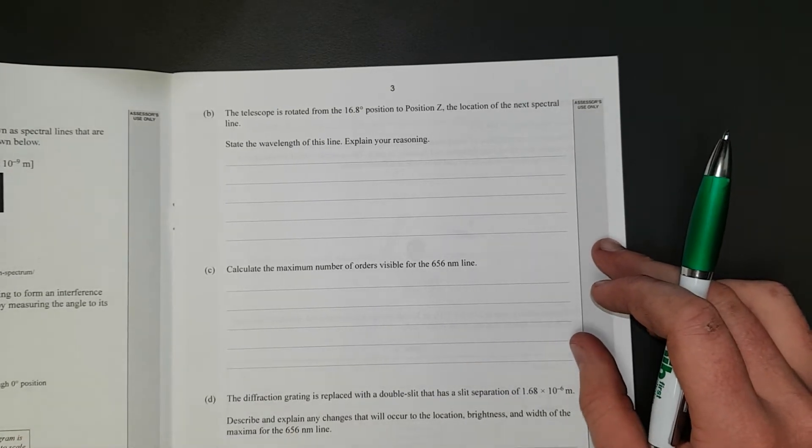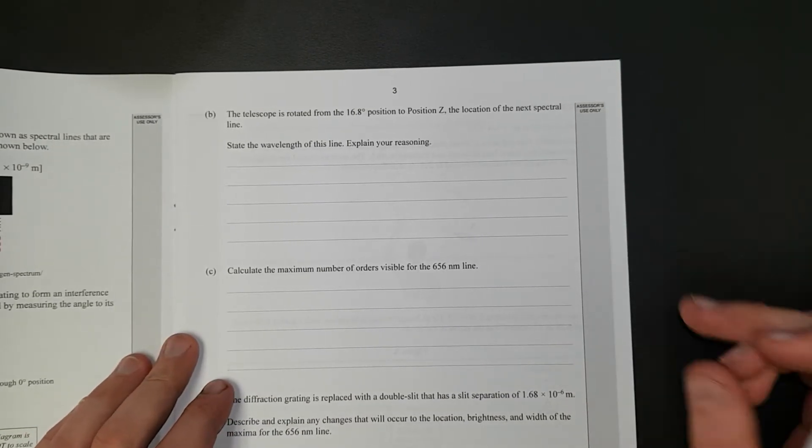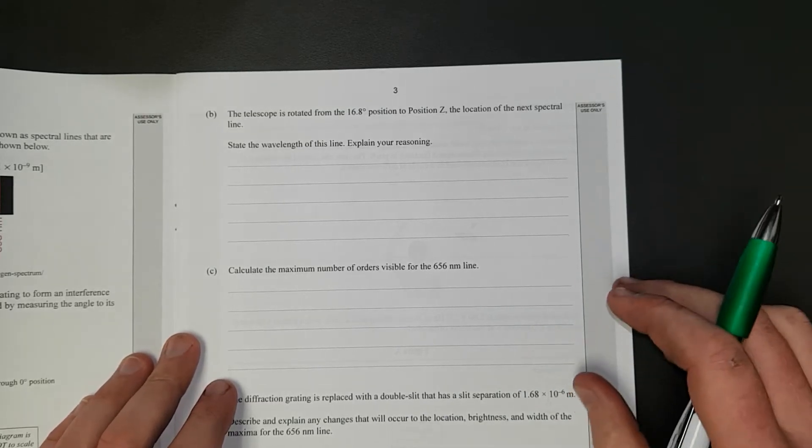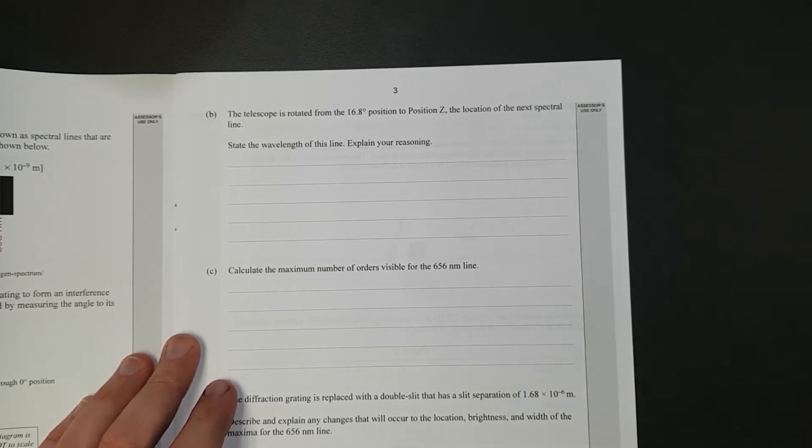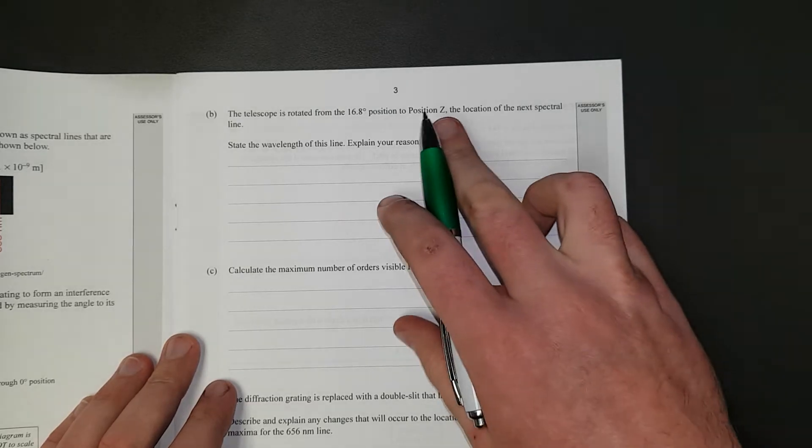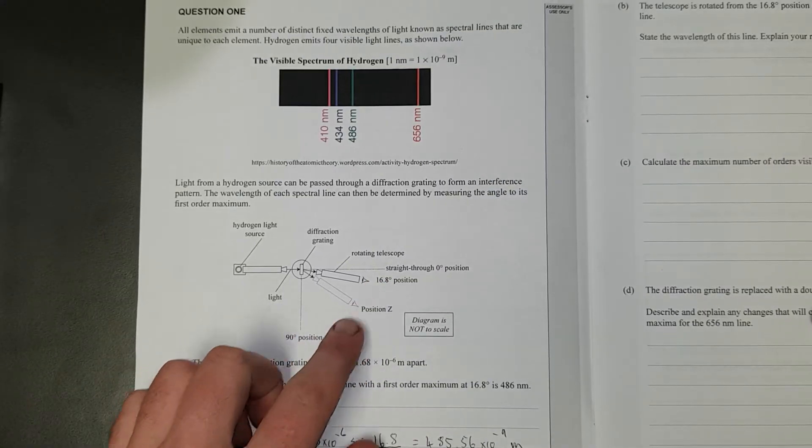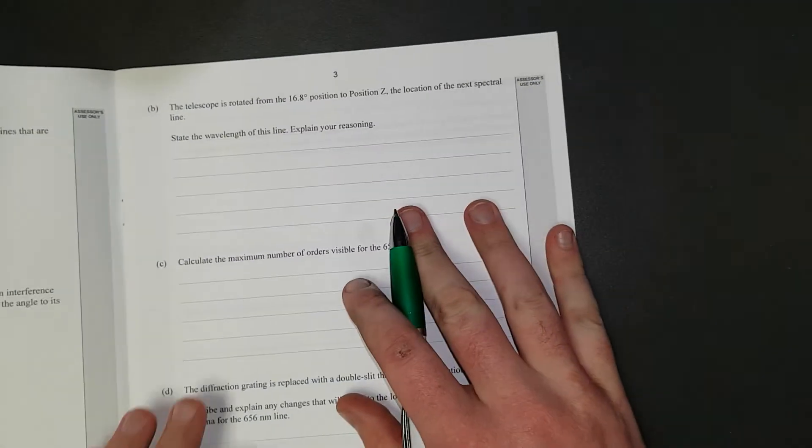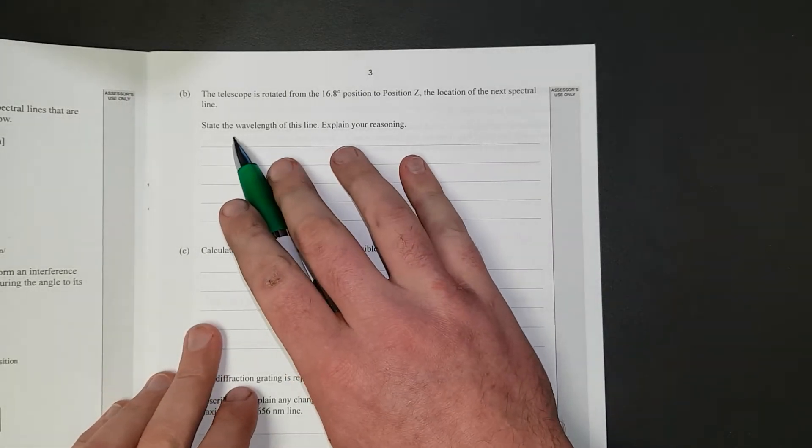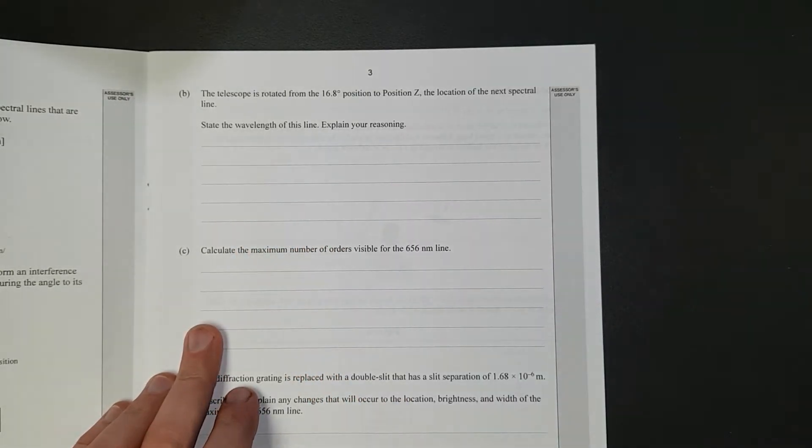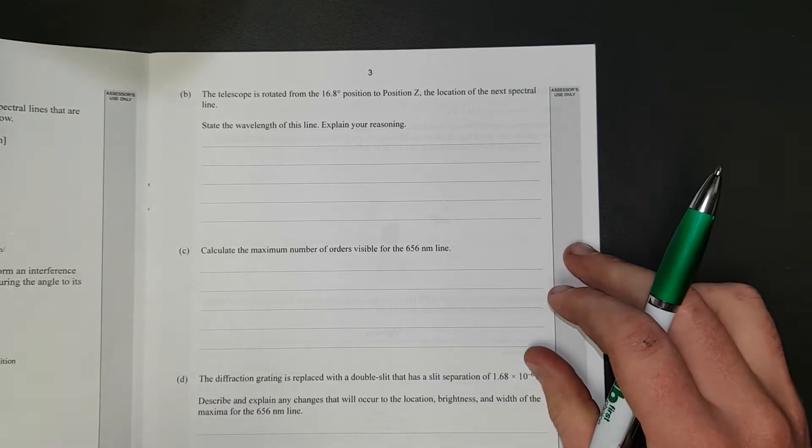Not that many people stuffed it up. The telescope is rotated from the 16.8 degrees position to position Z. It's from there to there. The location of the next spectral line state the wavelength of this line. Explain your reasoning. So I'll just pause the video, write the answer, then discuss.